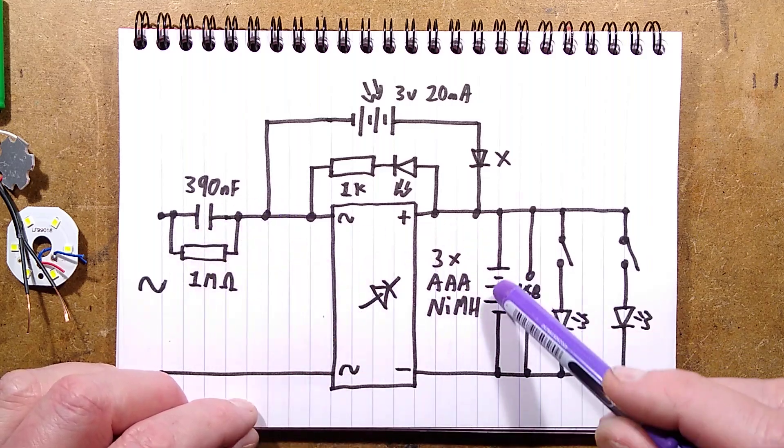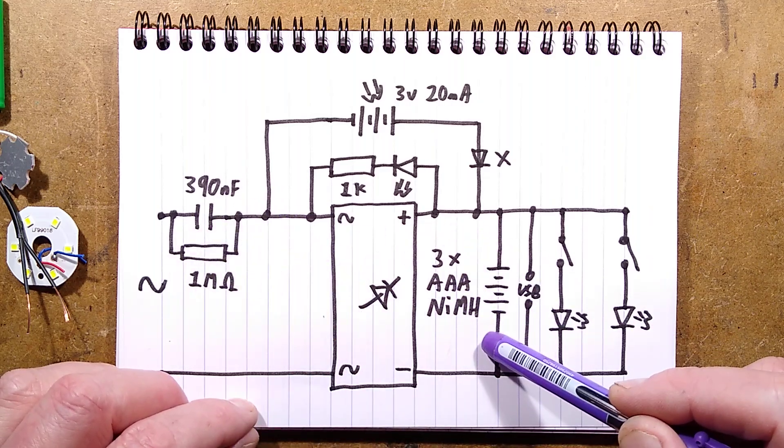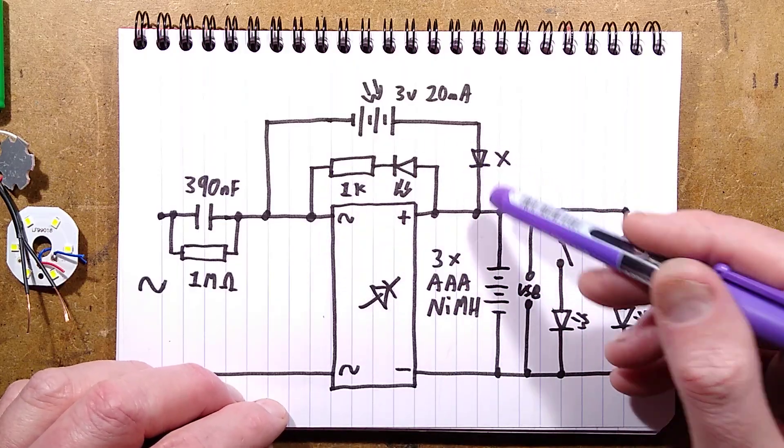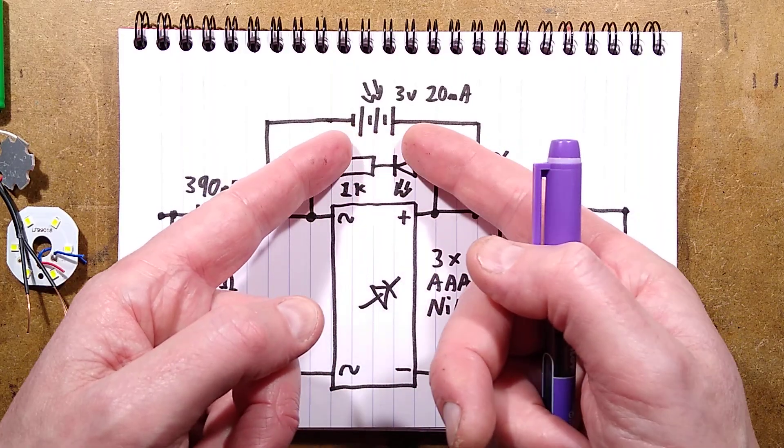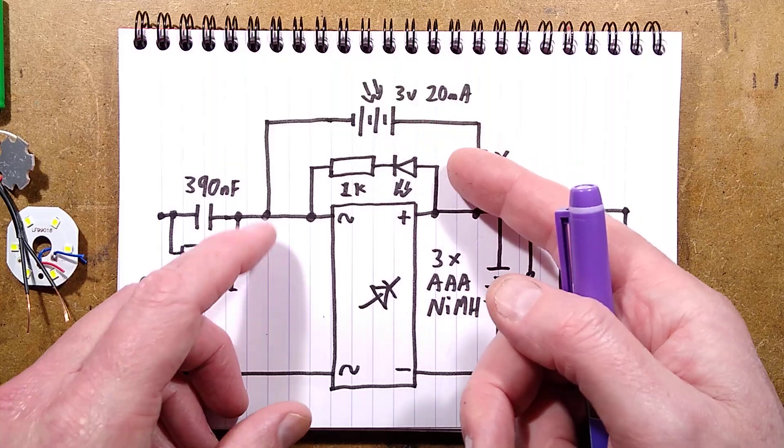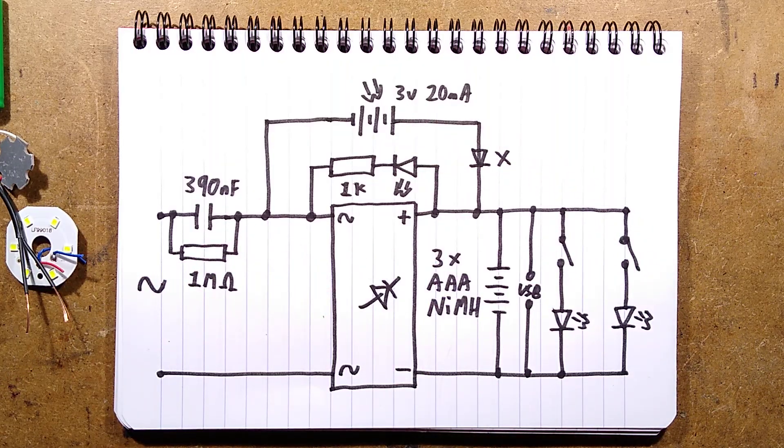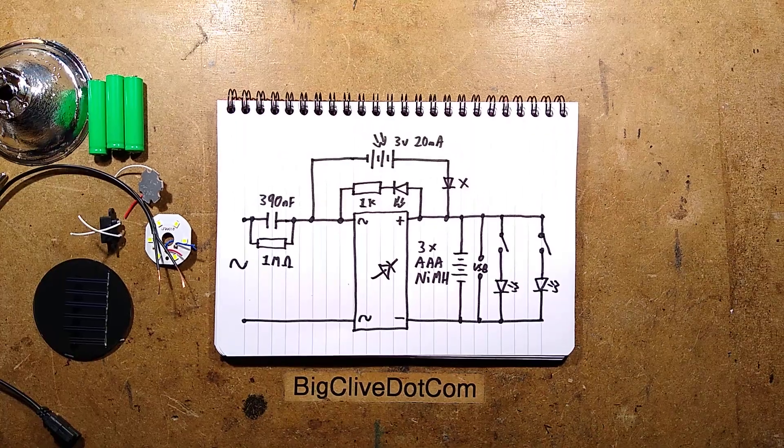But having said that, the voltage from this circuit will be capped theoretically by the cells that it's trying to charge, so they've just basically omitted that diode. They've not connected it and that means they can get away with one less sliver of silicon to actually make the LED light up. Very odd, very strange.